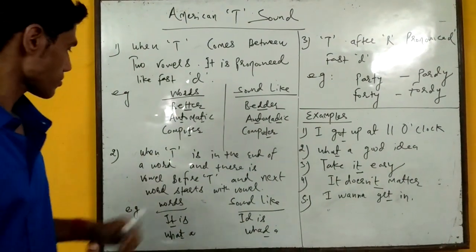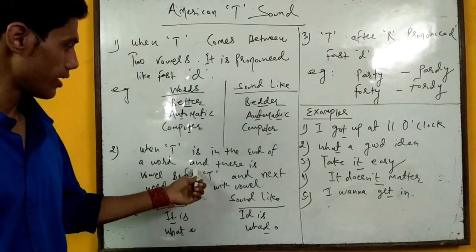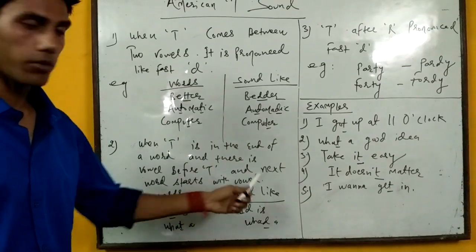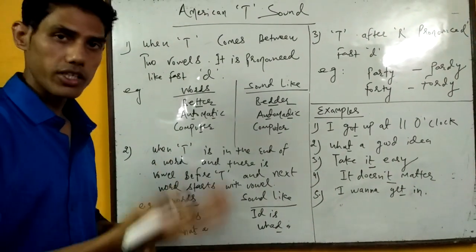We have another rule. When T is in the end of the word and there is a vowel before T, and the next word starts with vowel, once again we sound like flapped T.